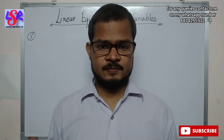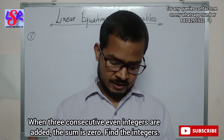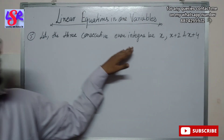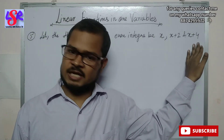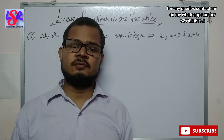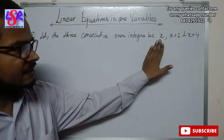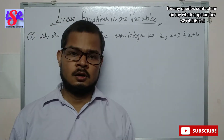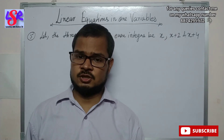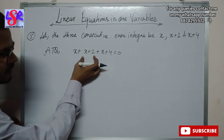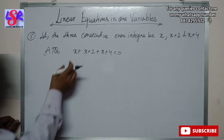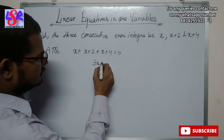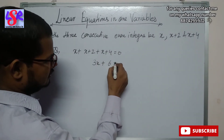Now let's see question number 5. Here, when three consecutive even integers are added the sum is 0. Find the integers. Now let the three consecutive integers be x, x plus 2, and x plus 4. The difference between two consecutive even integers is 2, so we add 2 each time. According to the question the sum of all three is 0. Therefore x plus x plus 2 plus x plus 4 equals to 0. Solving: 3x plus 6 equals to 0.